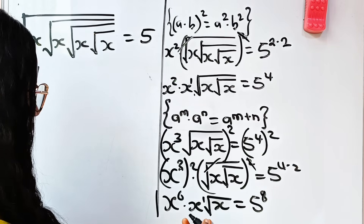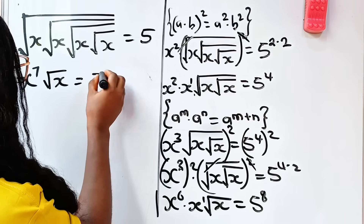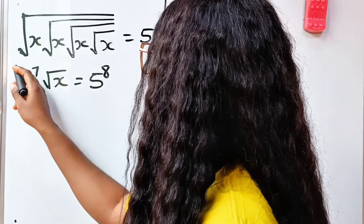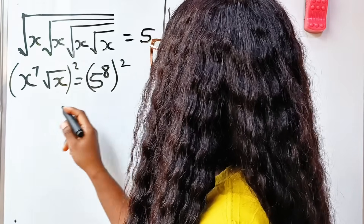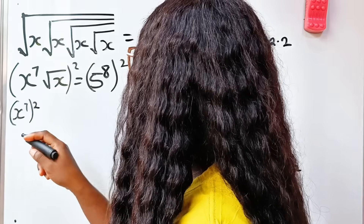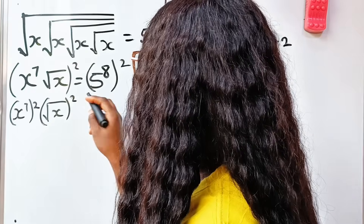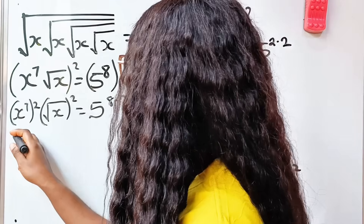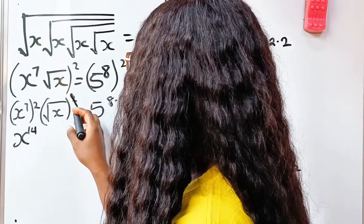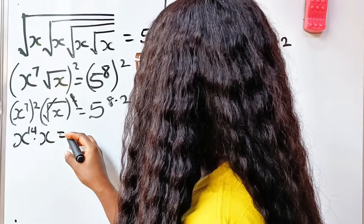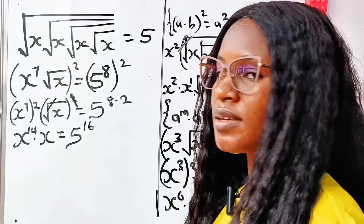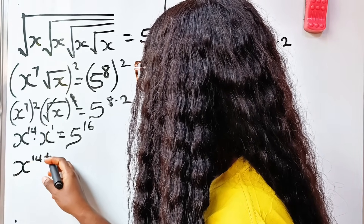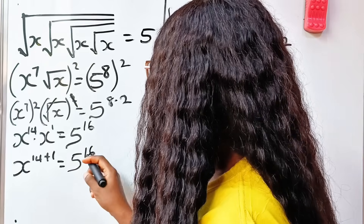Then we are going to square again to remove the last square root. So if we square again, we have x to the power of 7 squared — which is x to the power of 14 — then root x squared equals x, equal to 5 to the power of 8 multiplied by 2, which is 5 to the power of 16. So we have x to the power of 14 multiplied by x, which is x to the power of 1, giving x to the power of 14 plus 1, equal to 5 to the power of 16.